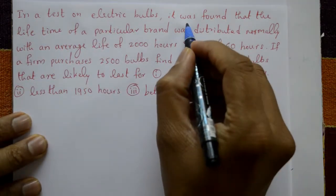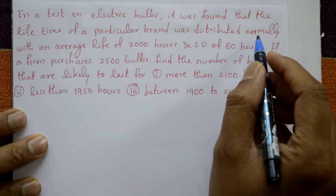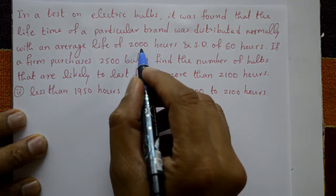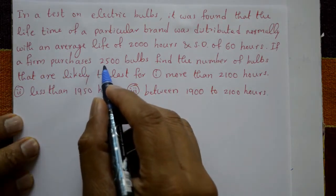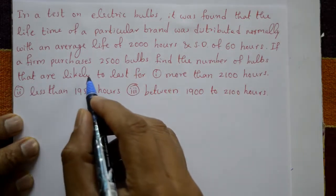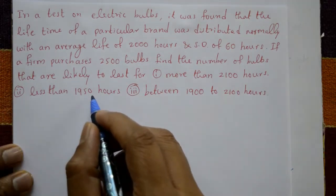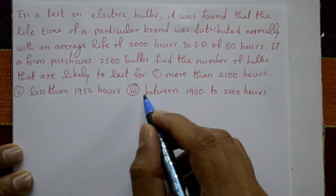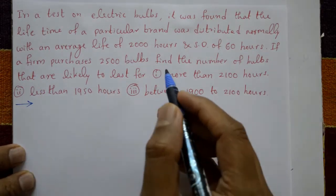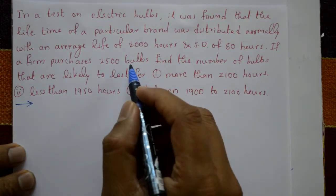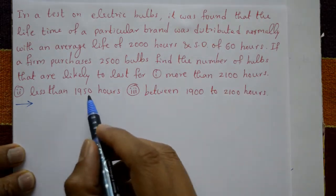In a test on electric bulbs, it was found that the lifetime of a particular brand was distributed normally with an average life of 2000 hours and standard deviation of 60 hours. If a firm purchases 2500 bulbs, find the number of bulbs likely to last for: case 1, more than 2100 hours; case 2, less than 1950 hours; case 3, between 1900 to 2100 hours.